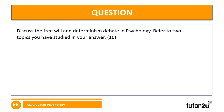The next question is a discuss question worth 16 marks: discuss the free will and determinism debate in psychology, referring to two topics you've studied. This is an extended answer covering AO1, AO2 (application, because it asks you to refer to two topics), and AO3 (evaluation). Remember, discuss means looking at both strengths and weaknesses. The mark split is six for AO1, four for AO2, and six for AO3. Aim for around 20 to 22 minutes of timed writing.